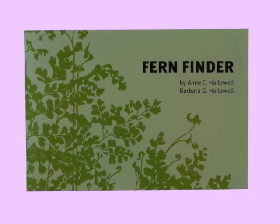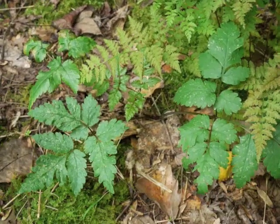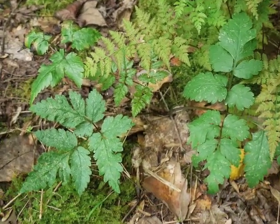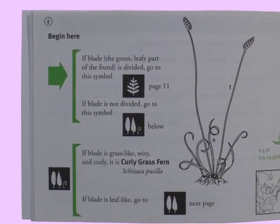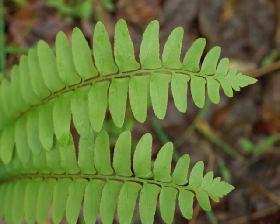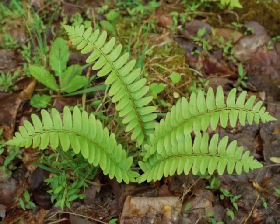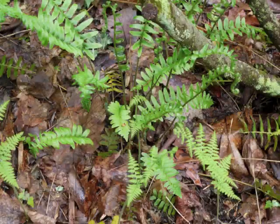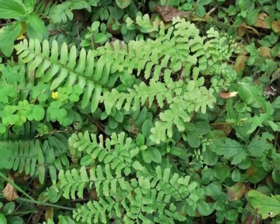The dichotomous key presents an either/or type of question to be answered for each possible defining characteristic of the plant. For example: if the blade is divided, go to page 11; if the blade is not divided, go to the next question below. Based on the answer about the fern's leafy frond, you proceed to the next appropriate question, which also presents an either-this-or-that response.